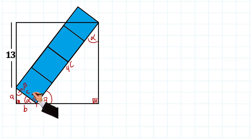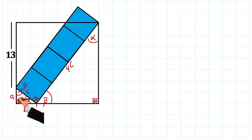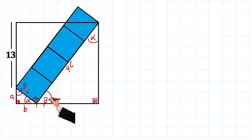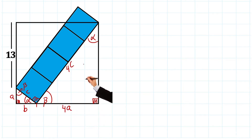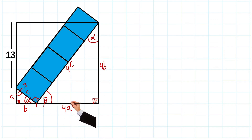What this means is that this large triangle is four times bigger than this small triangle, because the hypotenuse of the small triangle is c and the hypotenuse of the large triangle is four times c. Therefore, this side that connects 90 with beta — which is a — here becomes four times a, because it is four times larger than this triangle. And this side is going to be four times b.